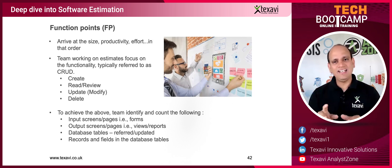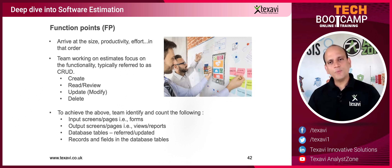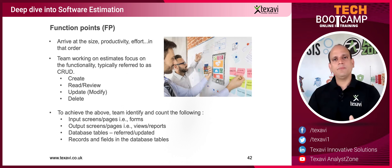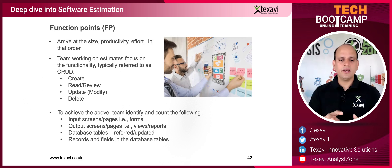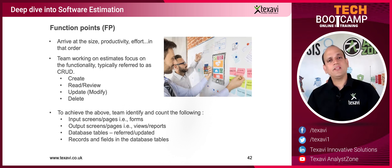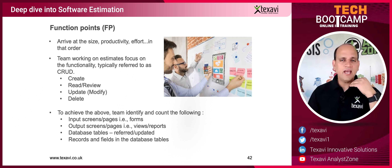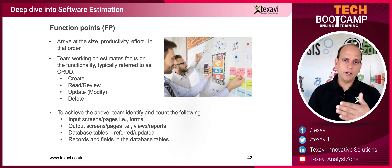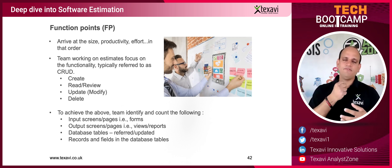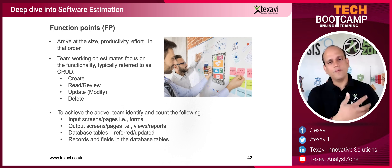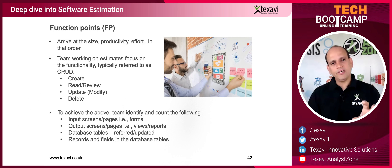The input screens are forms where users enter details. Output screens are what is shown on screen — essentially like reports that come out of the data. Then you identify the different database tables that need to be created, updated, or just queried to retrieve information and work with it.